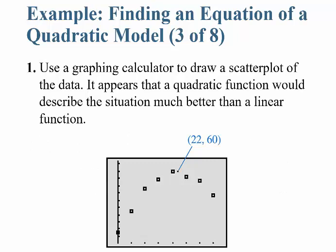First, use a graphing calculator to draw a scatter plot of the data. Once you do that, it appears a quadratic function would describe the situation best, because if you look, it seems like an upside-down U shape — so you don't want to use a linear function.